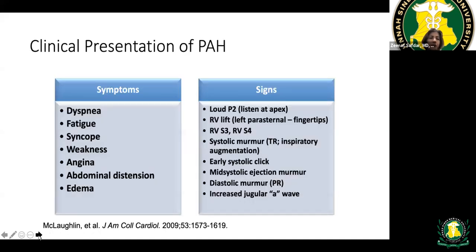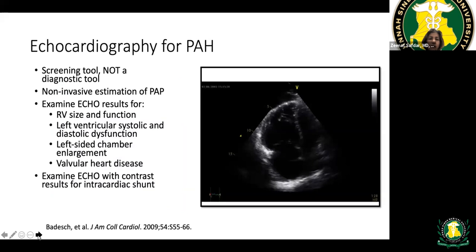Symptoms of PH are non-specific: shortness of breath, fatigue, weakness. Syncope is a sign of advanced disease — pre-syncope or syncope are very poor prognostic signs. On physical examination there may be evidence of right ventricular hypertrophy, an RV heave, loud P2 at the apex, systolic murmurs, and jugular venous distension. Echocardiogram demonstrates a dilated right ventricle and right atrium, with the interventricular septum bowing toward the left side.